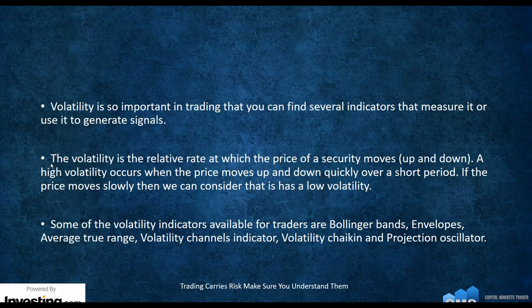Volatility is so important that you can find several indicators that measure it and generate signals. Volatility is the relative rate at which the price of a security moves up or down. High volatility occurs when price moves quickly over a short period of time; if price moves slowly, it has low volatility. Volatility indicators include Bollinger Bands, envelopes, ATR (Average True Range), Volatility Channel Indicator, Volatility Chaikin, and Projection Oscillators. The most popular recommendation is Bollinger Bands — we have a whole one-hour class on it. Bollinger Bands will show you all the volatility in the markets, and help you find entry and exit signals.